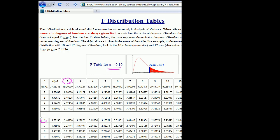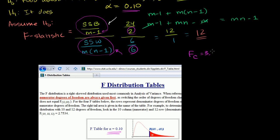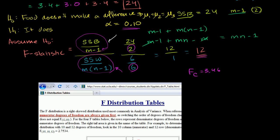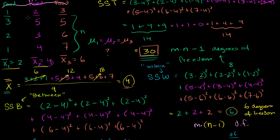Our critical F value is 3.46, but the value we calculated from our data is 12 — much larger than that. It's going to have a very small p-value; the probability of getting something this extreme just by chance, assuming the null hypothesis, is very low. Because our F-statistic far exceeds the critical value at a 10% significance level, we reject the null hypothesis, leading us to believe there actually is a difference in population means — the different foods probably do affect exam performance.